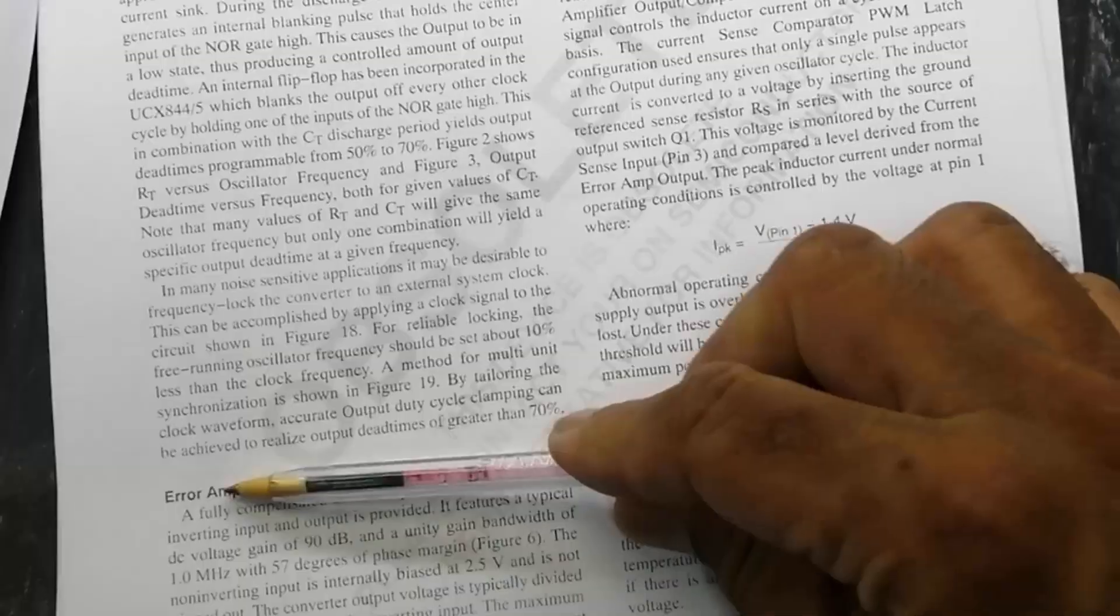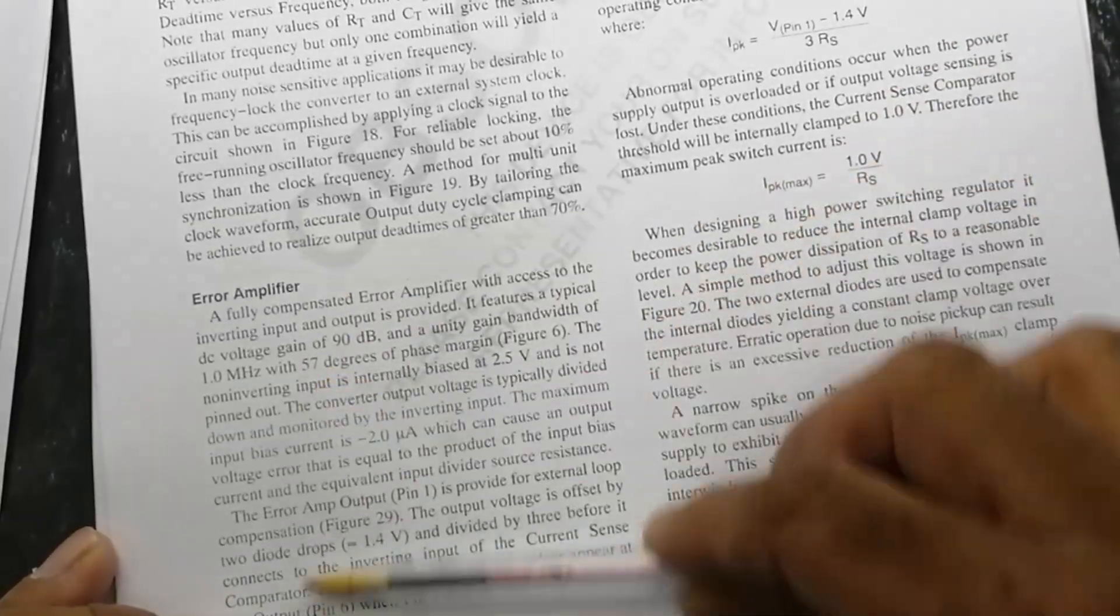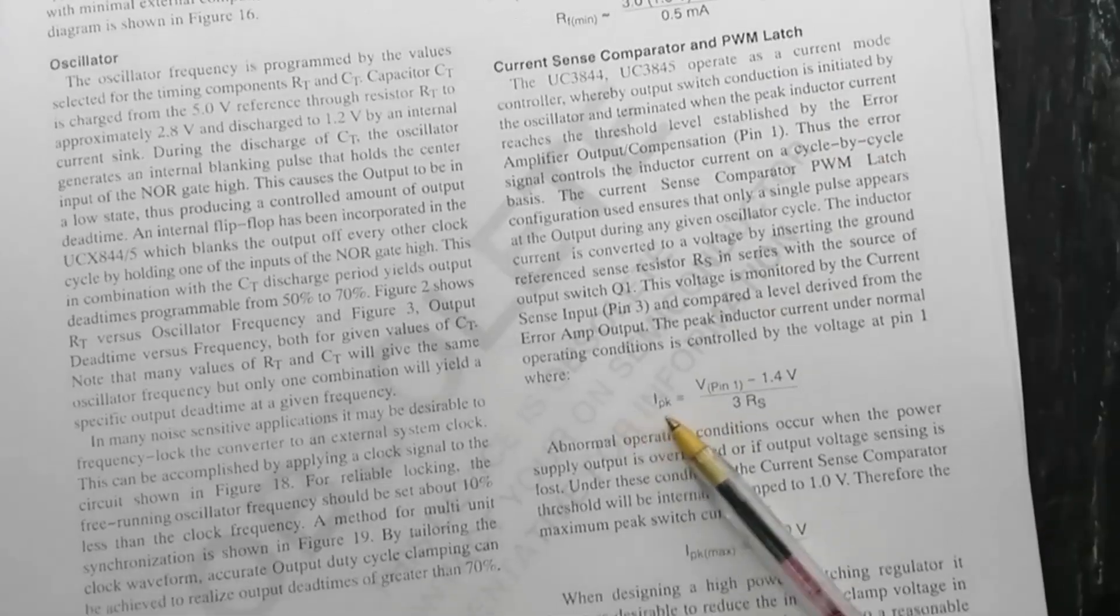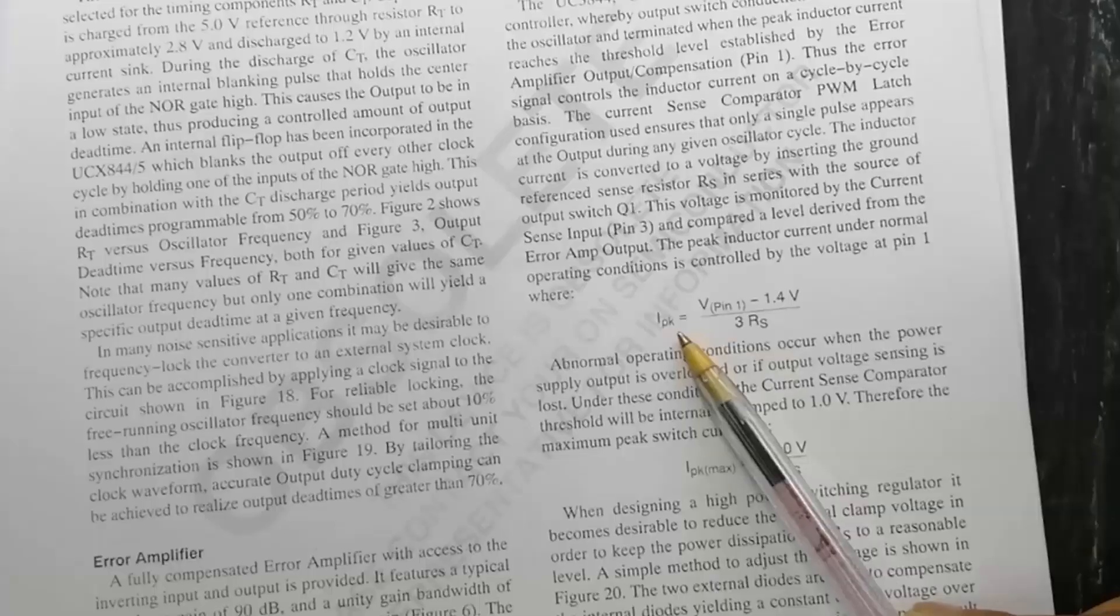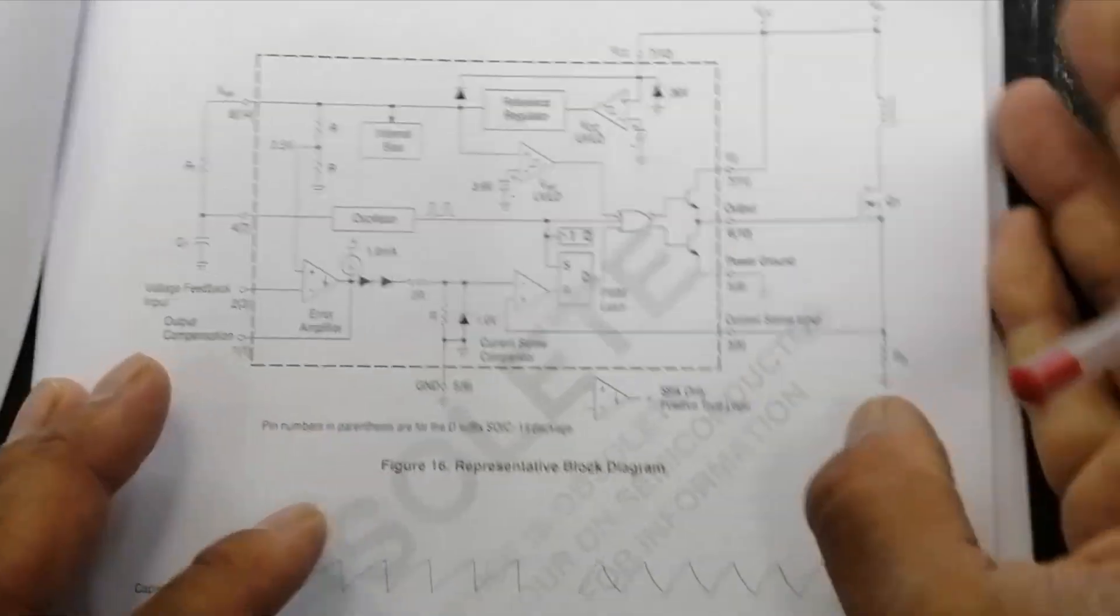How we can select error amplifier, how we can adjust and how it works. It's complete included here: currents and comparator and PWM latch. IPK, here is current sense, IPK minimum, maximum. Then we have a typical circuit as we discussed.